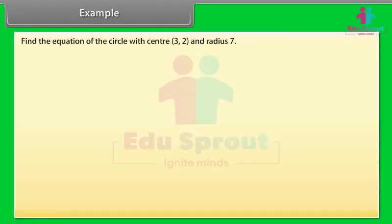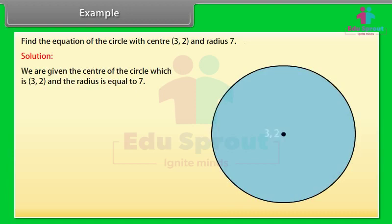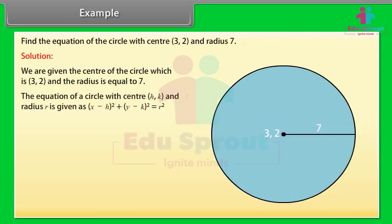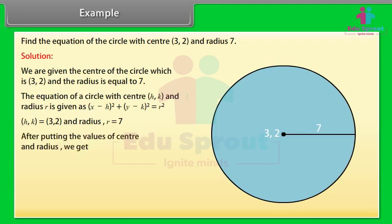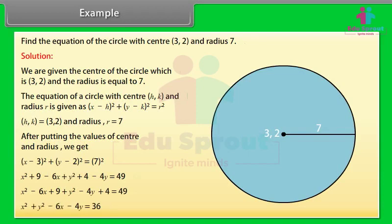Example: Find the equation of the circle with center (3, 2) and radius 7. Solution: We are given the center of the circle which is (3, 2) and the radius is equal to 7. The equation of a circle with center (h, k) and radius r is given as (x − h)² + (y − k)² = r². With h = 3, k = 2, and r = 7, we get (x − 3)² + (y − 2)² = 49. By calculating, we get x² + y² − 6x − 4y = 36.